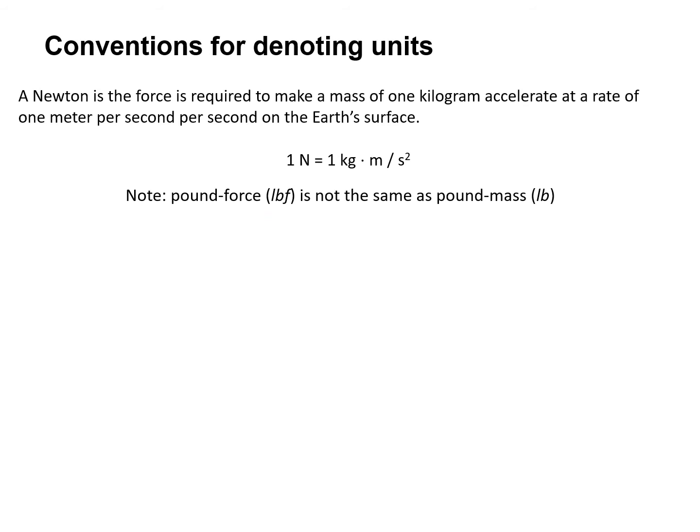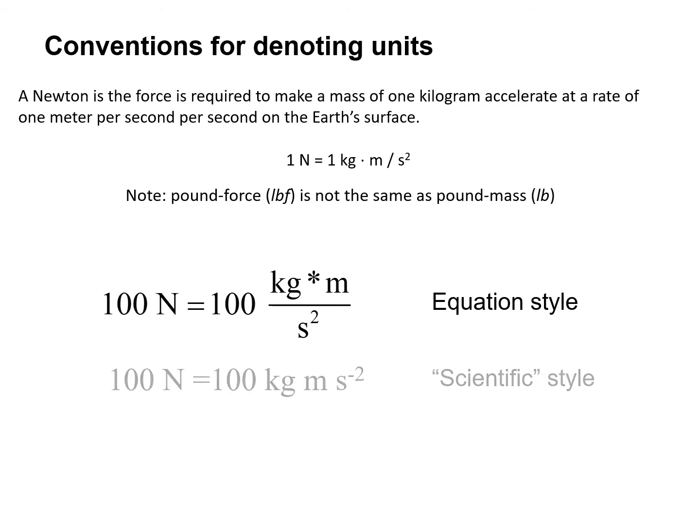A newton is the force required to make a mass of one kilogram accelerate at a rate of one meter per second per second on the Earth's surface. So one newton is one kilogram times meters divided by second squared. That's one convention for denoting units. Here's another way, an equation style, a scientific style that's easier to put in a publication. And then this is unit style: instead of dealing with kilograms, meters, and seconds, we're dealing with mass, length, and time.